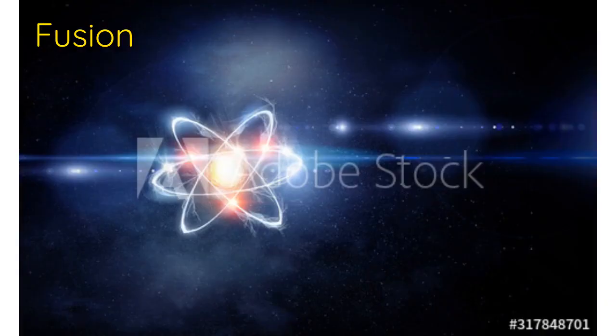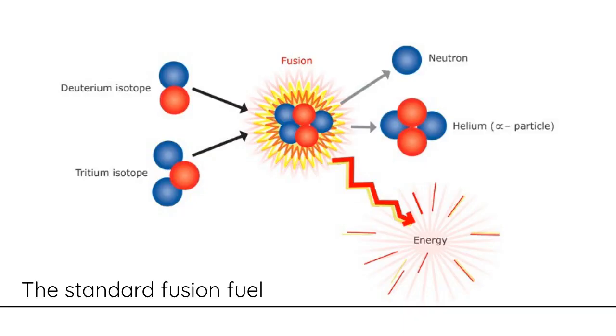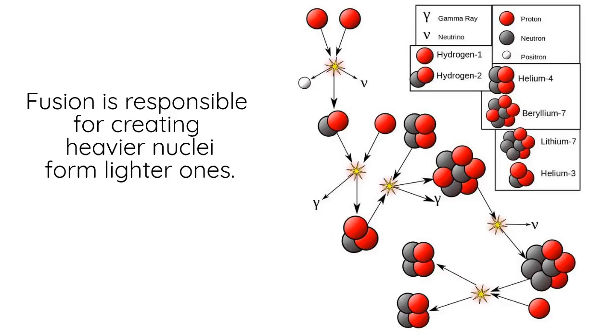For fusion to occur, we need to reach temperatures near to that of the sun. This is where the tokamak comes up. We use a mixture of deuterium and tritium hydrogen isotopes as fusion fuel.